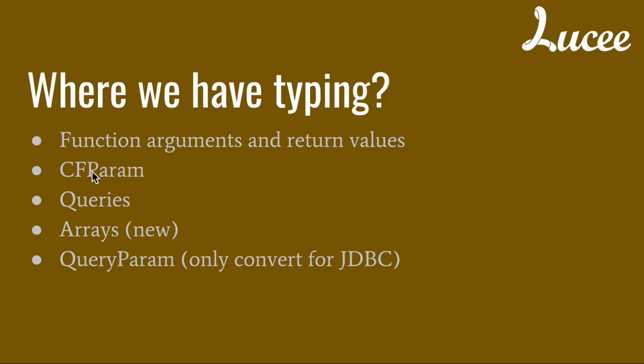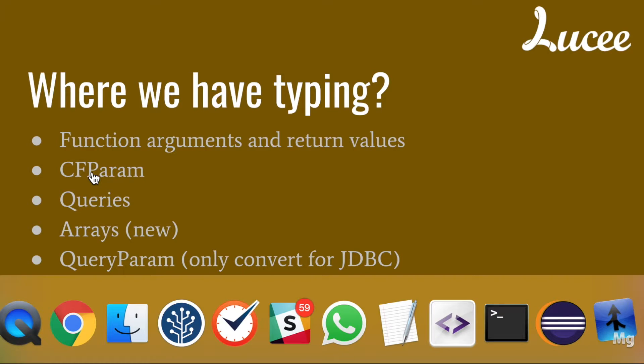The next thing we look at is cfparam. That's the type feature that has existed the longest in the language.